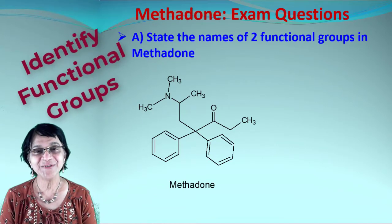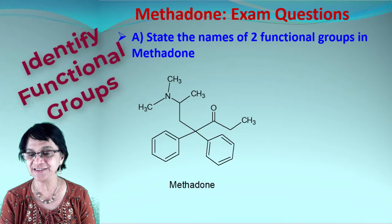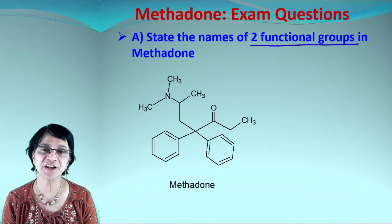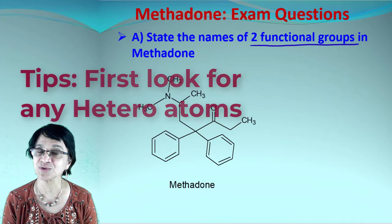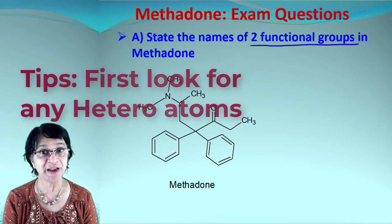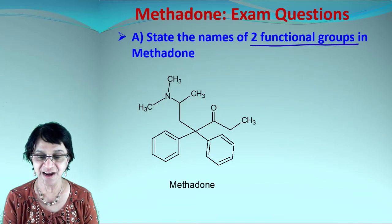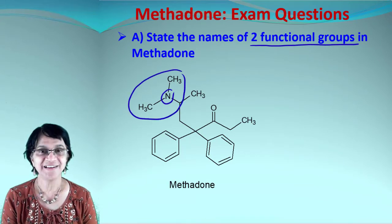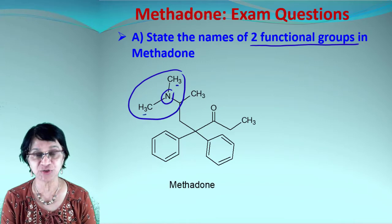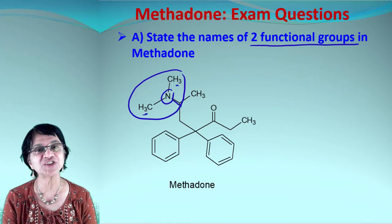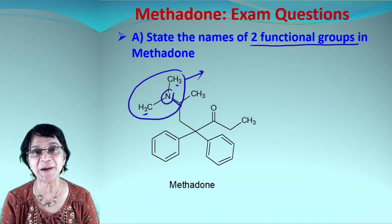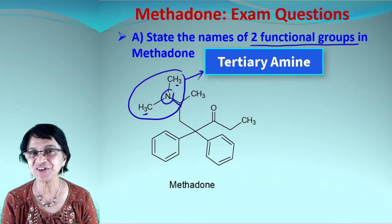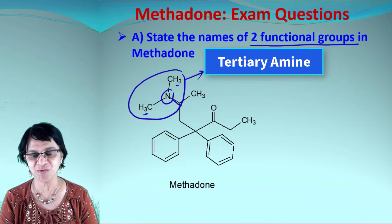The first question asks us to write down at least two functional groups found in methadone. A useful strategy: functional groups often contain heteroatoms. So I'll look for atoms apart from carbon and hydrogen. There's a nitrogen — that means we look at what's surrounding it. This nitrogen is connected to two methyl groups and another alkyl branch, which tells me this is an amine. Since there is no hydrogen linked to the nitrogen, it must be a tertiary amine — that's our first functional group.